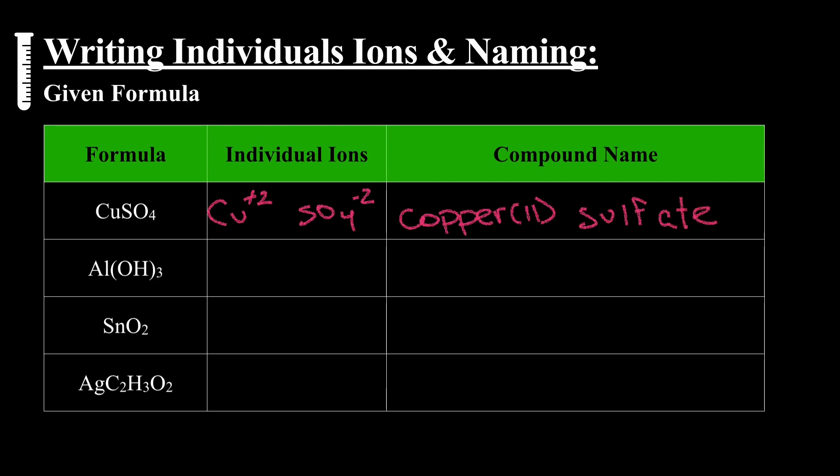Al(OH)3, well the aluminum is a known charge, it's a plus three, and the hydroxide from the polyatomic minus one, so naming this aluminum hydroxide. I don't need to put parentheses on the charge or Roman numerals on the charge on the aluminum, because it's a known charge.